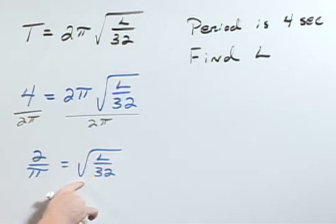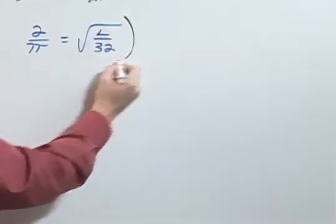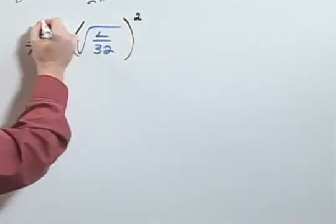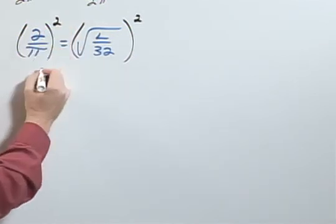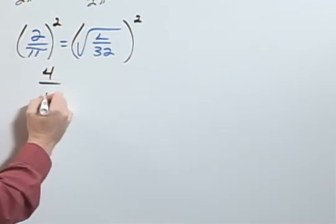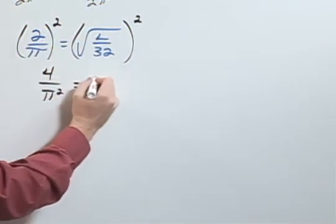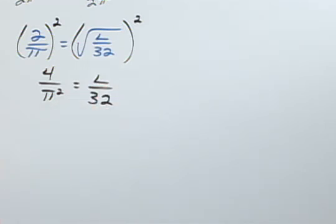Next, let's get rid of the square root by squaring both sides of the equation. So we have 4/π² = L/32.